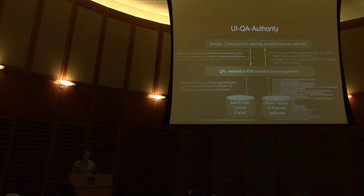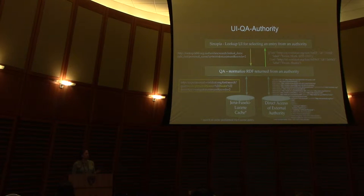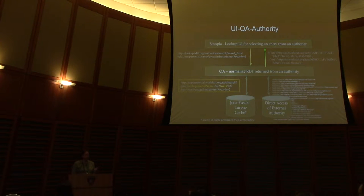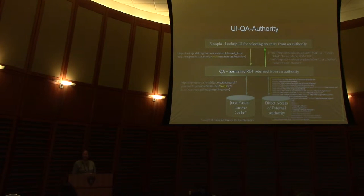The basic process is that the application makes a query to Questioning Authority — in our case, our instance of the server is lookup.ld4l.org. It makes this query in basically the same format in all cases: it identifies what authority it is, such as OCLC FAST, says whether or not we want to subset the data down to something like just person names, and then specifies the query. That goes through QA, which knows the authority and turns the request into the real URL for the API.